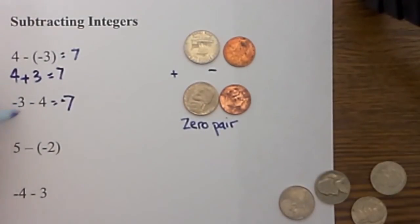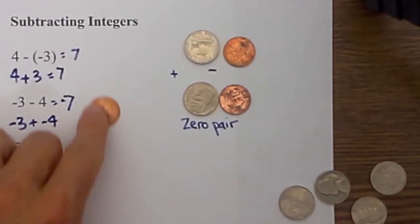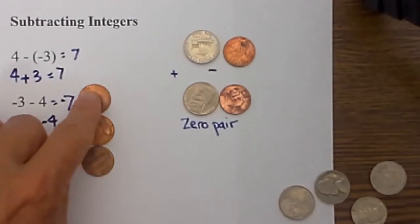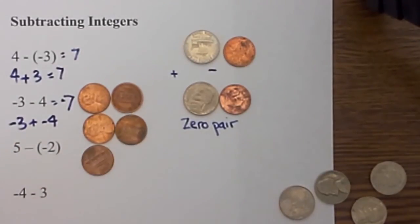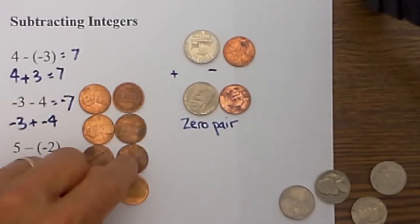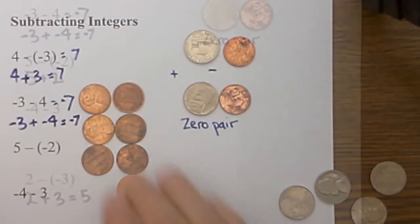I have a negative number and a subtraction, so what I will do is simply change the sign and then change the sign of the number directly behind the subtraction. I now put down three negatives for this number and four negatives here. It is now an addition problem, so I have seven negative numbers — minus seven.